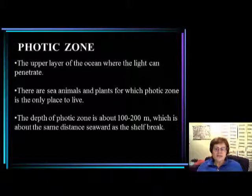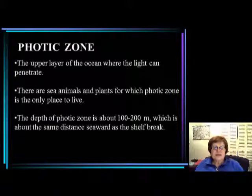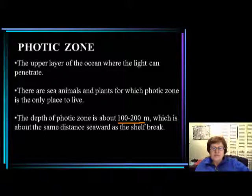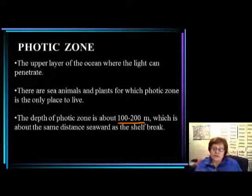Now we need to talk about the photic zone. The photic zone is the upper level of the ocean where light can penetrate — usually about 100 to 200 meters. There are many animals and plants that can only live in the photic zone. One of the best examples is the coral reef, so whenever you see coral fossils, you know they had to be in the photic zone.